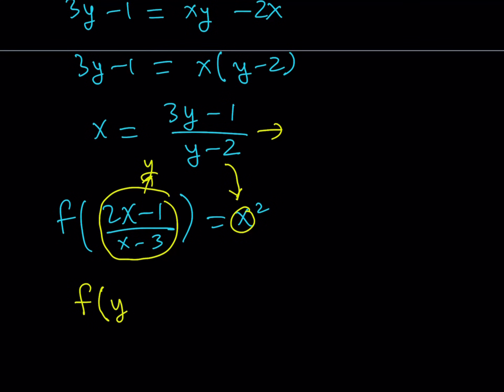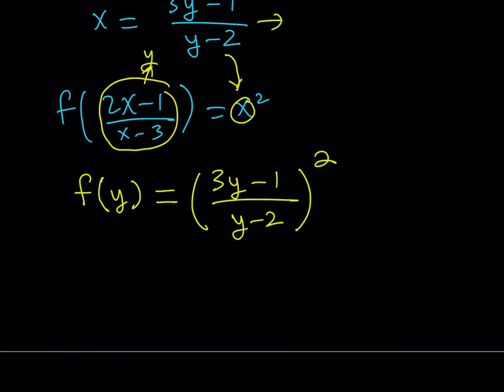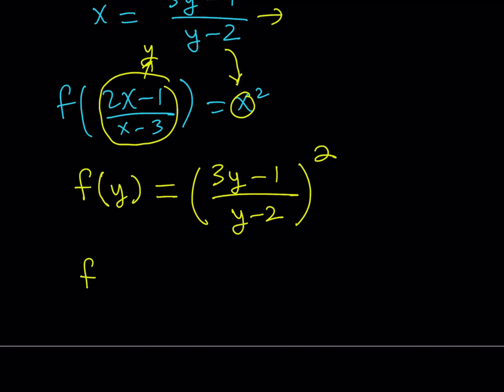So this is going to be f of y is equal to x squared, but x will be replaced with 3y minus 1 over y minus 2. And of course, I need to square that. If you square this expression, you're going to be getting f of y is equal to 9y squared minus 6y plus 1 over y squared minus 4y plus 4.